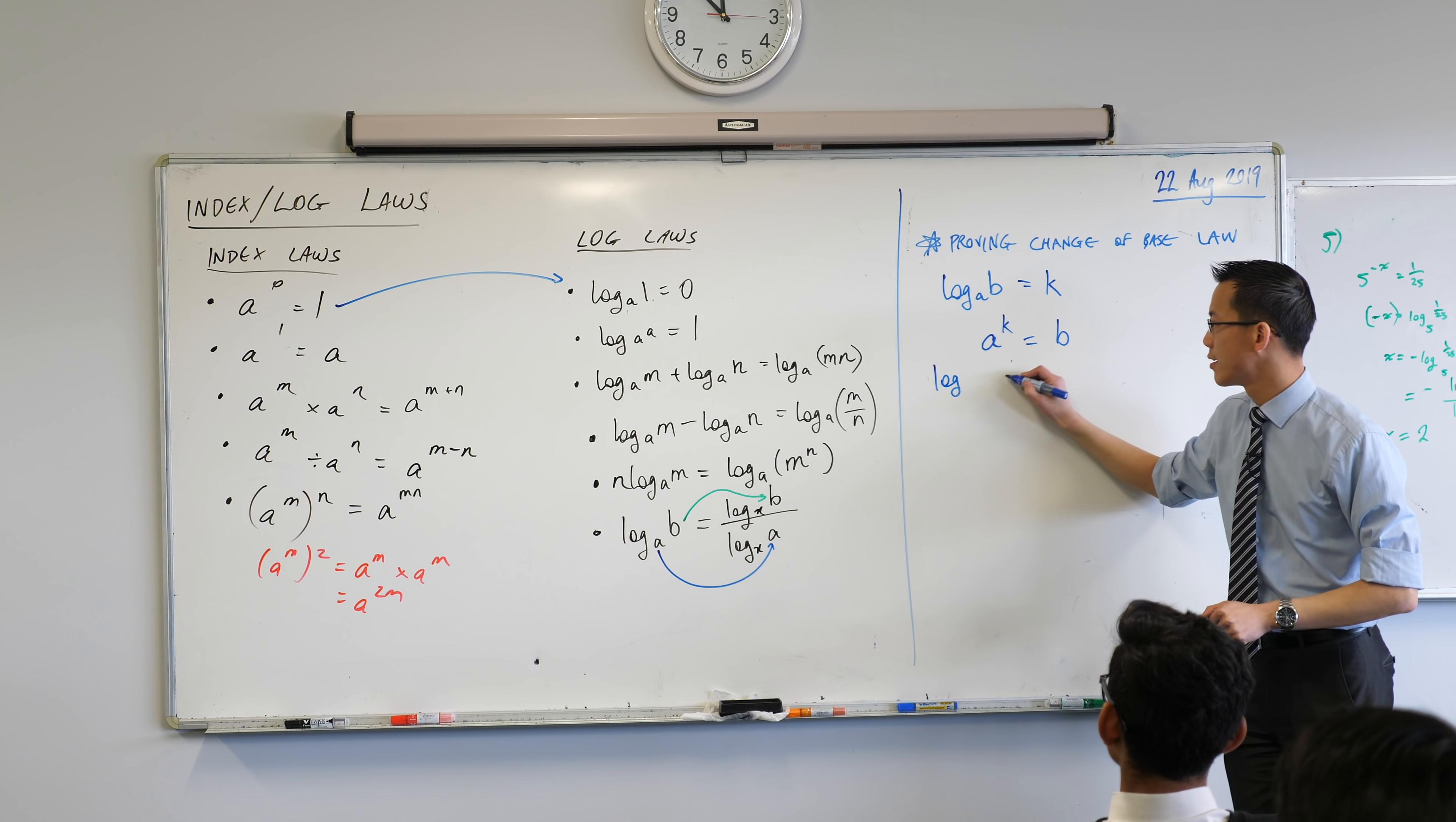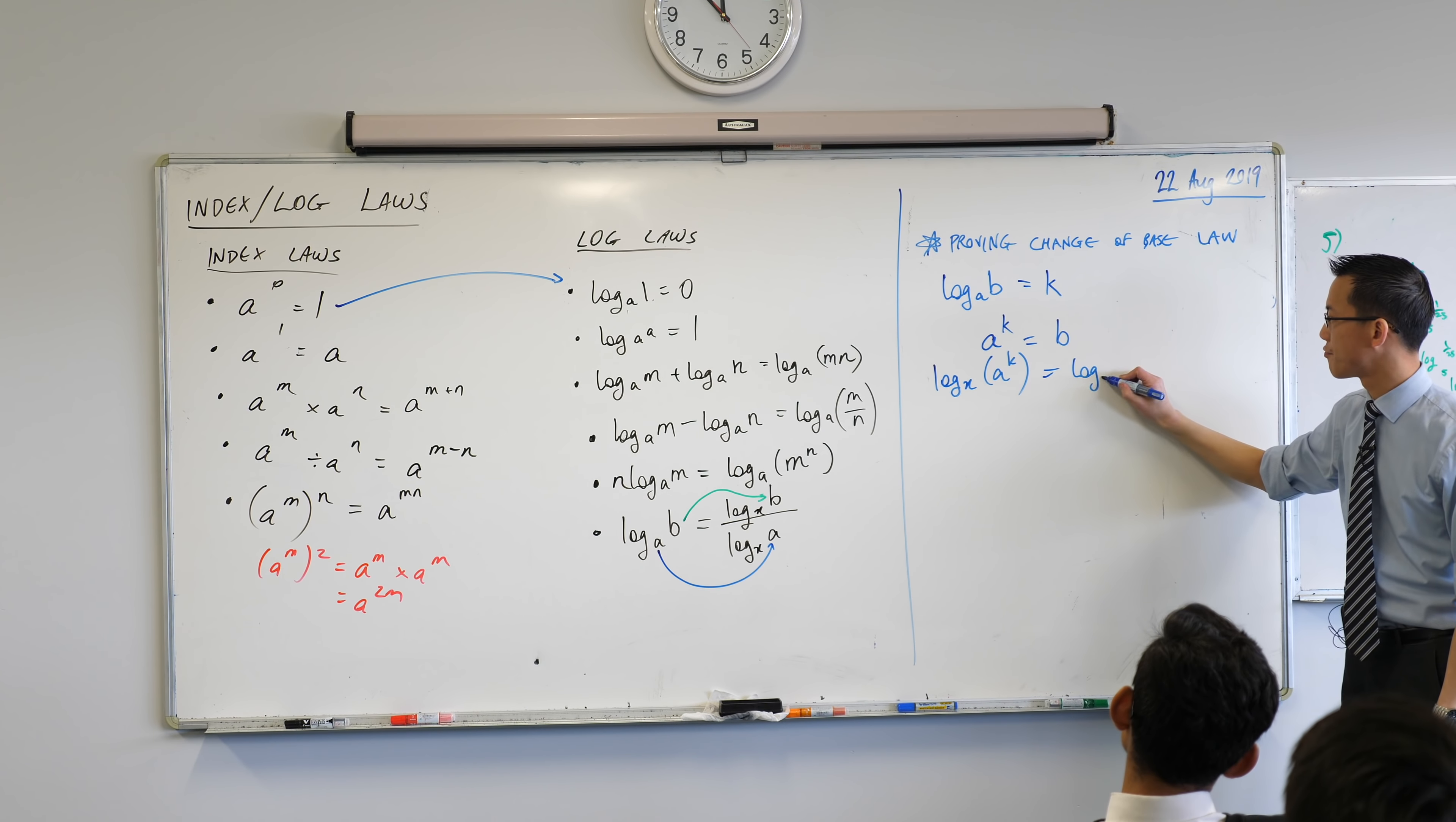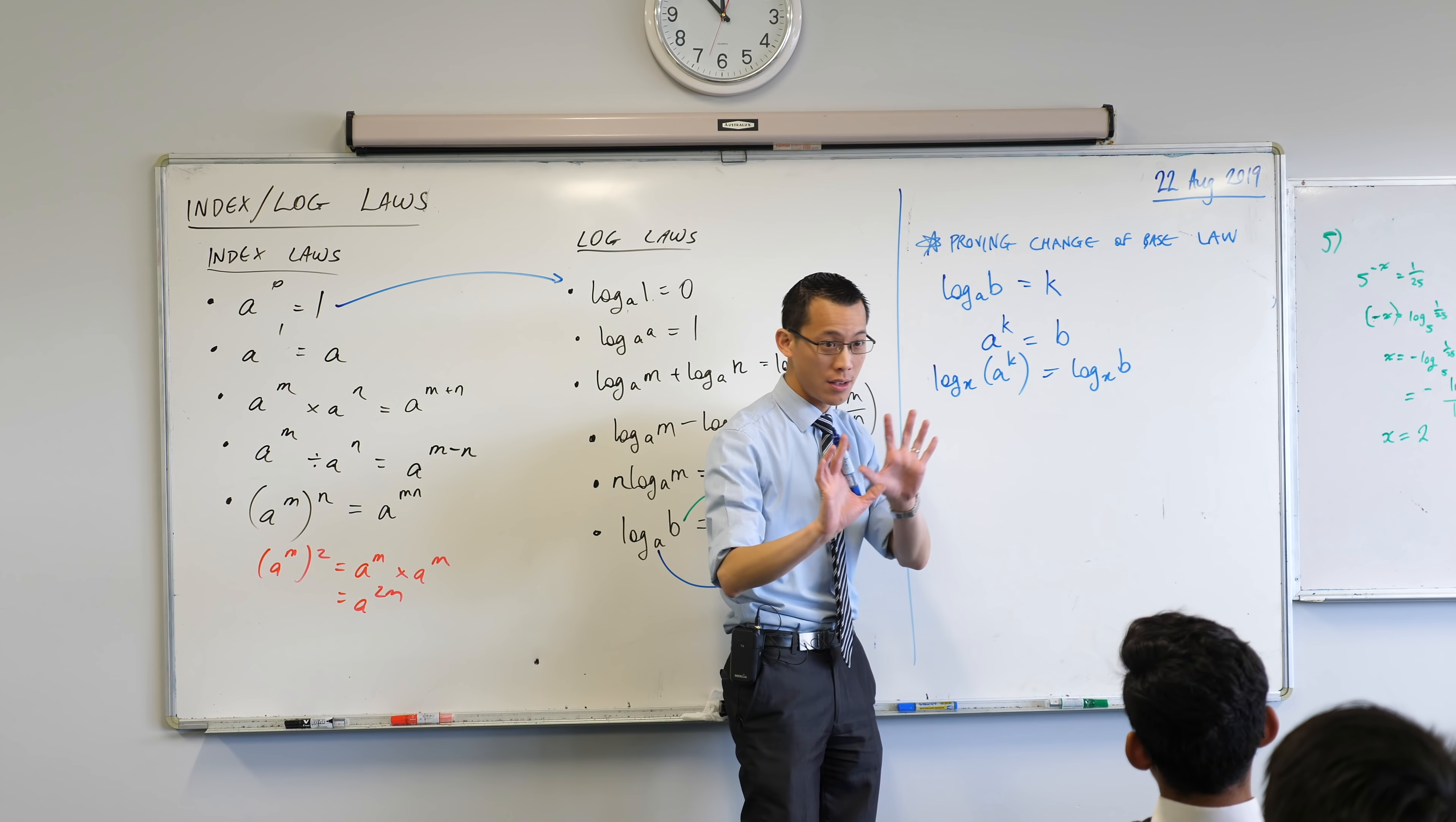Take logs of both sides. This is my new base that I'm introducing. If I took log on this side, I'm going to take log on this side. Are you okay with that? It's like adding two to both sides or dividing both sides by five. I just took logs of both sides. So far, so good?